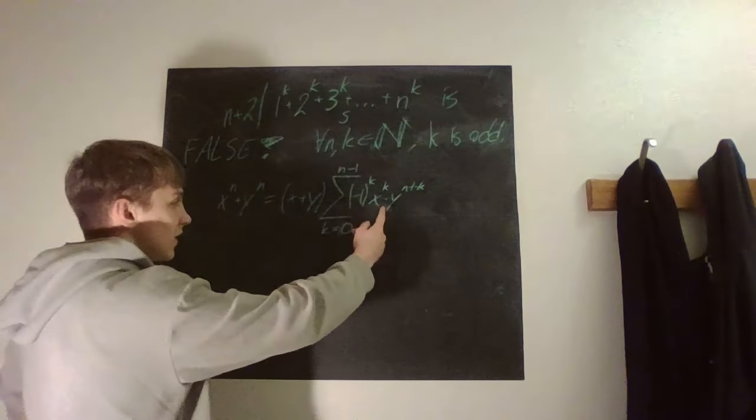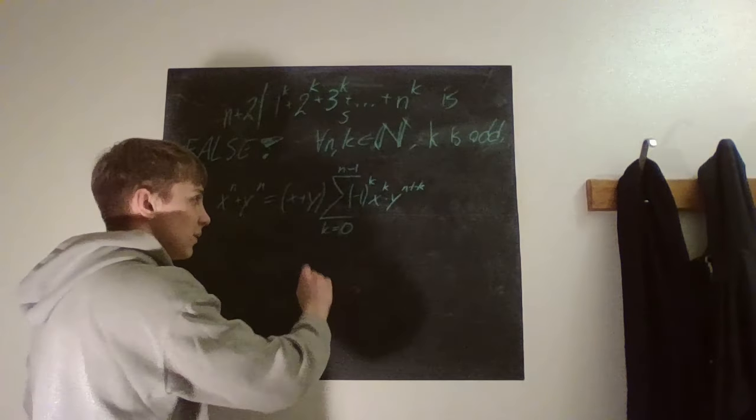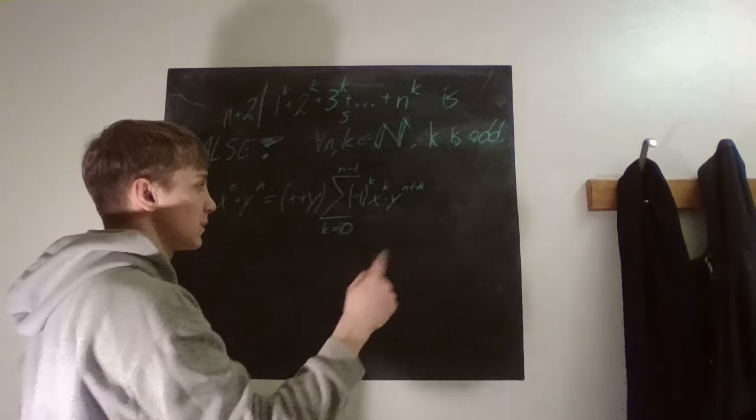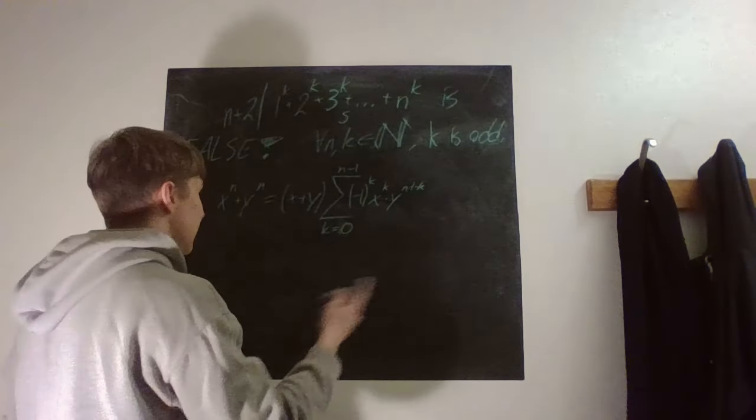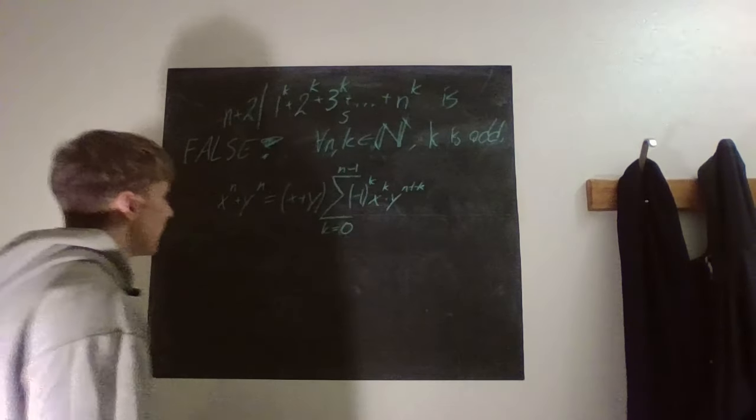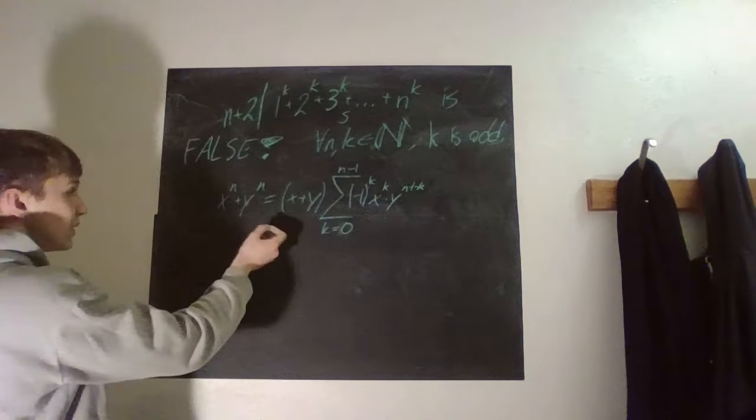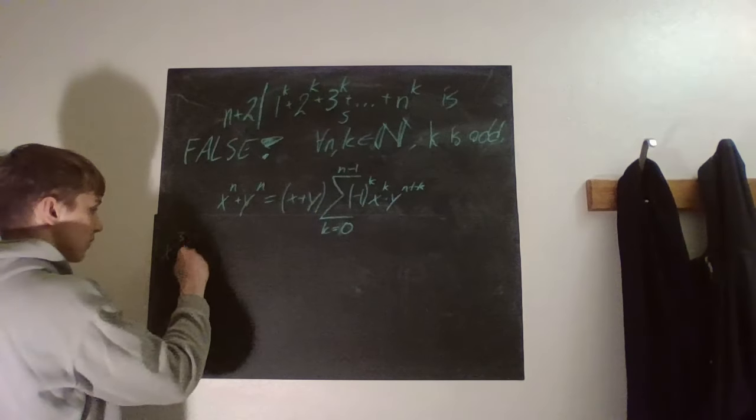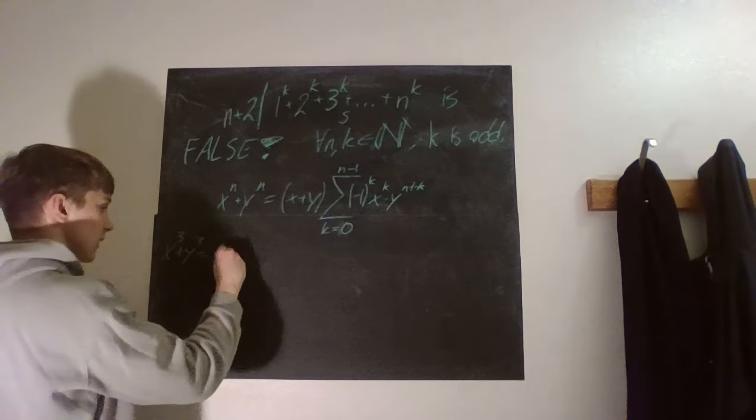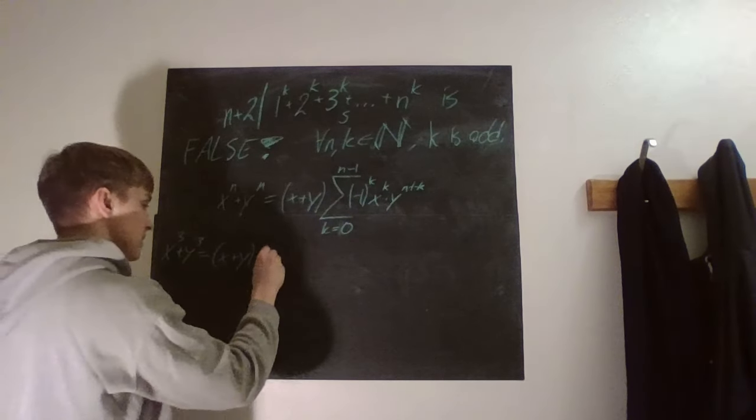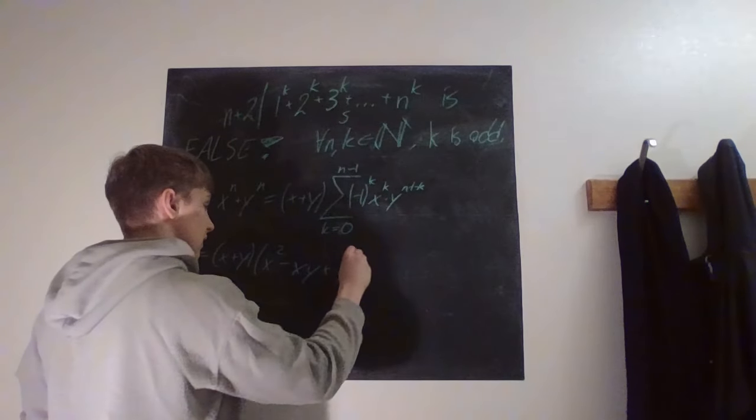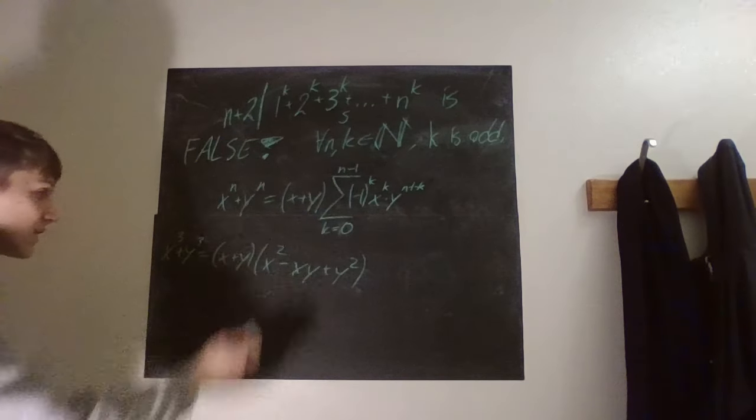So essentially what is this part right here? We have y to the power of n minus 1 minus x times y to the power of n minus 2 and so forth. Maybe you've seen the case for when you have 3s here, so then you have x cubed plus y cubed is equal to x plus y times x squared minus xy plus y squared.